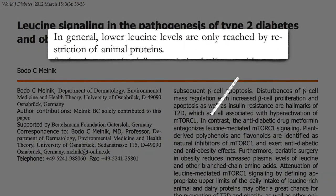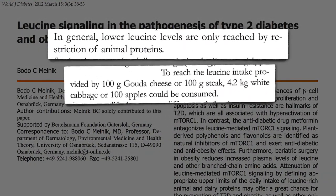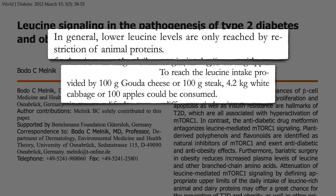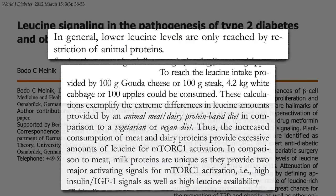In general, lower leucine levels are only really reached by the restriction of animal proteins. To reach the leucine intake provided by dairy or meat, you'd have to eat like 9 pounds of cabbage or 100 apples. These calculations exemplify the extreme differences in leucine amounts provided by a more standard diet in comparison to a more plant-based diet.